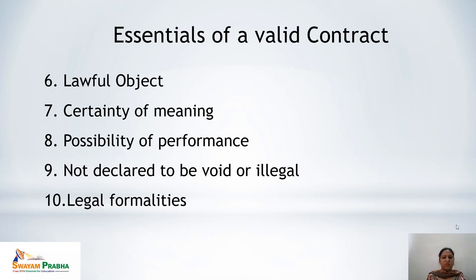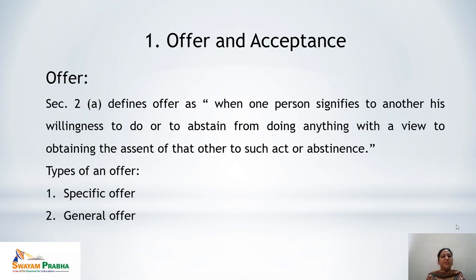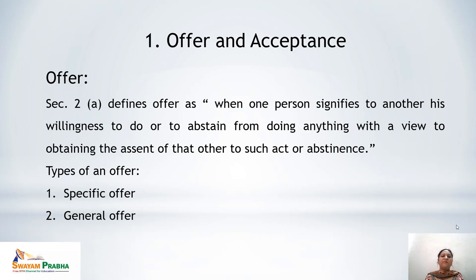In this chapter we will cover the first two essentials. Starting with offer and acceptance: Section 2(a) defines offer as when one person signifies to another his willingness to do or abstain from doing anything, with a view to obtaining the assent of that other to such act or abstinence. Reading this definition carefully, there are three important factors: expression of willingness, another person to whom the offer is made, and the intent to get the assent of that other person.